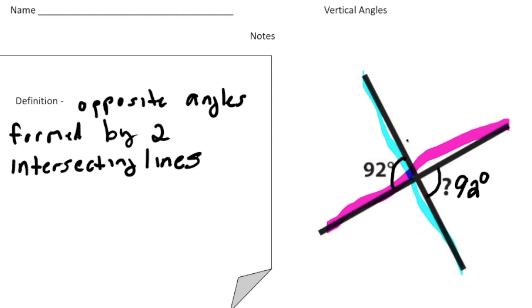All right. Which means this angle right here. Let's call this angle A. This angle A is going to be the same as this angle over here, which is angle B, because they're going to be opposite of each other. So the big thing to remember is vertical angles are created by two intersecting lines, and they're opposite, and they're always equal.